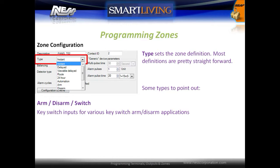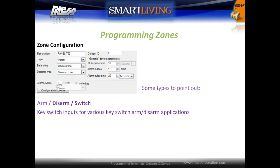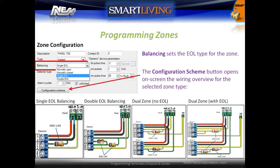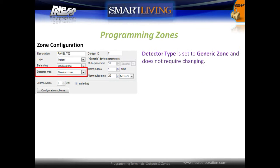Balancing will set the end-of-line termination type. The Configuration Scheme button will display a wiring diagram for the selected balancing type — very handy when wiring up doubled zones. Detector type should be set to generic zone.